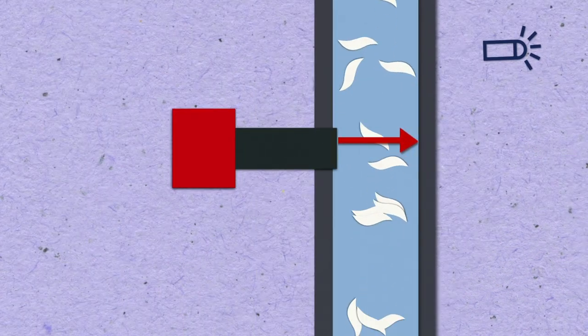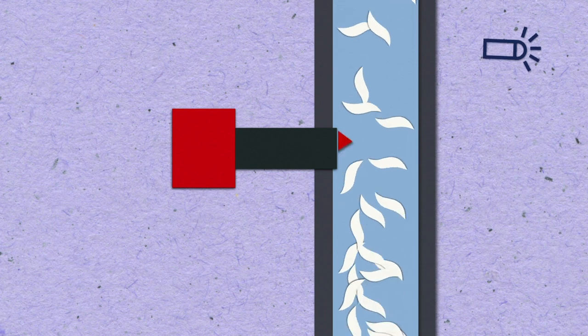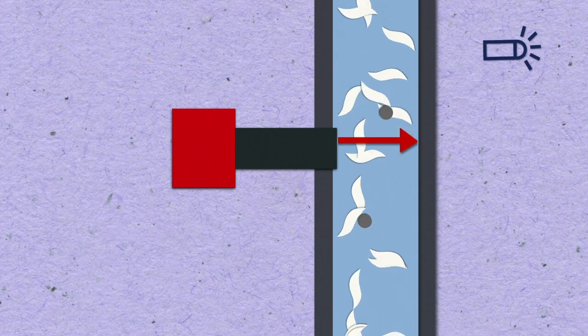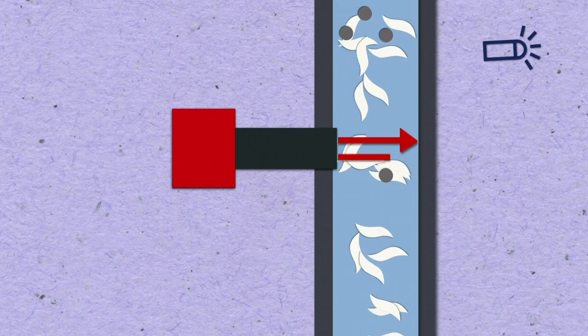Optical sensors are suitable for any position. They can provide total consistency values, which include non-fiber materials, such as ash. They also have no moving parts, which means they require very little maintenance.